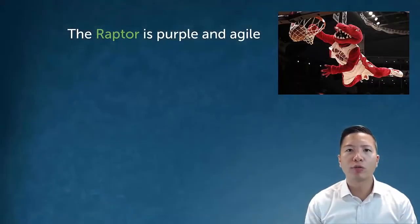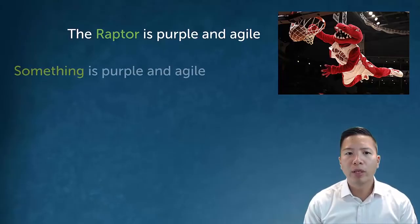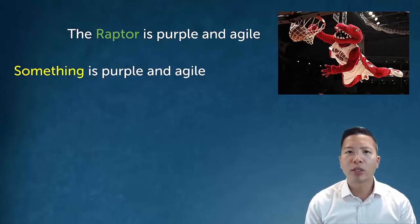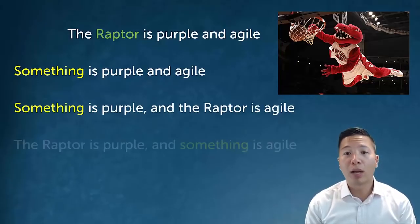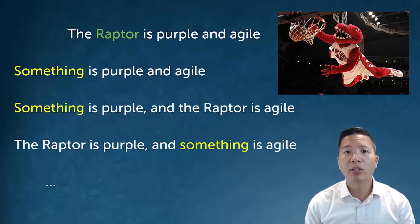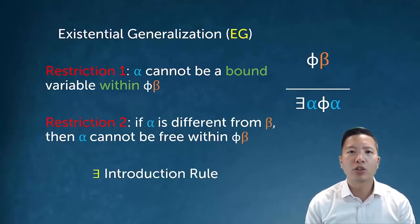Now we add the introduction rules for quantifiers. The first is existential generalization (EG), the introduction rule for the existential. Consider: the raptor is purple and agile. From this we can infer something is purple and agile. But other things follow too — something is purple and the raptor is agile, or the raptor is purple and something is agile. The EG rule captures all these different ways to generalize from a sentence.